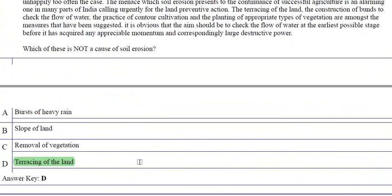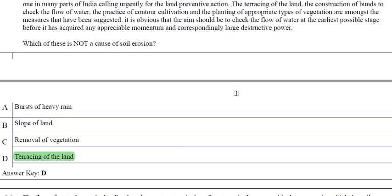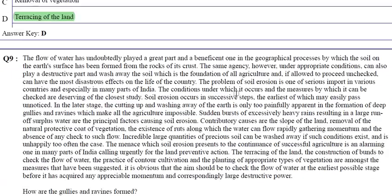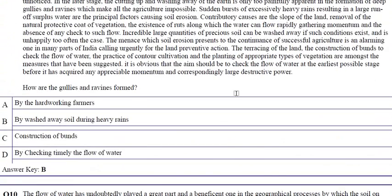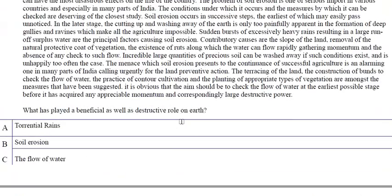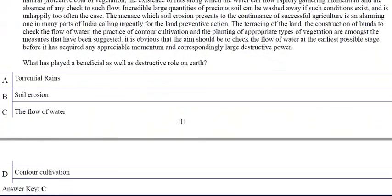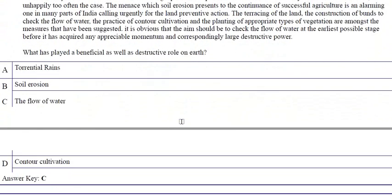Burst of heavy rain, slope of land, and removal of vegetation are causes of soil erosion. Gullies and ravines are formed by soil washed away during heavy rains. The flow of water has played both a beneficial and destructive role on earth.